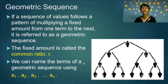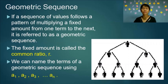Looking at the geometric sequence illustration: the first level is 1, and at each level it is duplicated. The next level is 2, then 4, and 4 is multiplied by 2 to give 8, and so on.